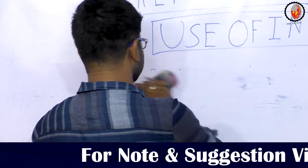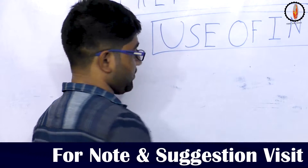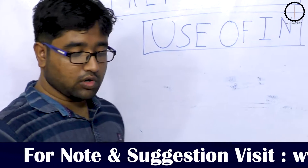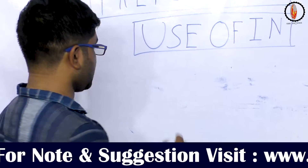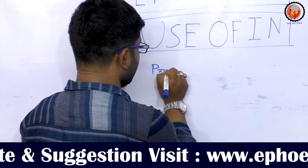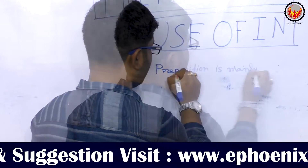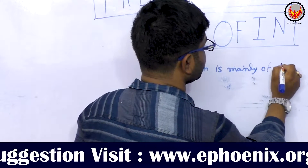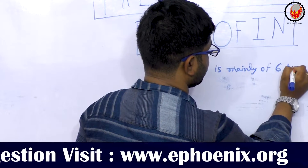How many prepositions are there? Prepositions are mainly of six types.